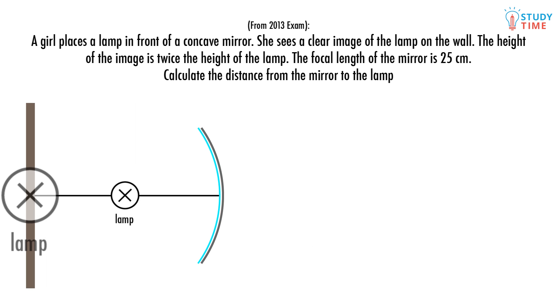The first thing to do is make a list of what we know. f equals 25 centimeters and m, the magnification, equals two, from the image being twice the height of the object. Since m is also the image distance over the object distance...